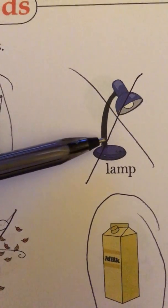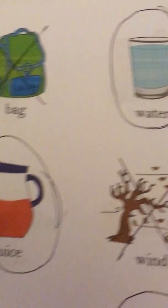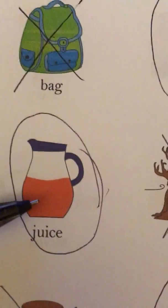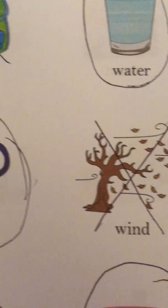This one is a lamp. A lamp is a solid, so we put an X on it. This is juice, and juice is definitely a liquid, so we put a circle around it.